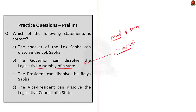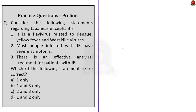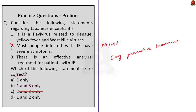The third question is on Japanese encephalitis with three statements. Statement 3 says there is an effective anti-viral treatment for Japanese encephalitis patients — this is incorrect, as there is no antiviral treatment. Eliminating options B and C, statement 2 says most people infected have severe symptoms — also incorrect, since most have no symptoms or only mild symptoms. Therefore the answer is option A — only statement 1 is correct: it is a flavivirus related to dengue, yellow fever, and West Nile viruses, as discussed.